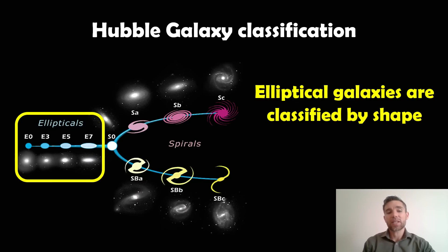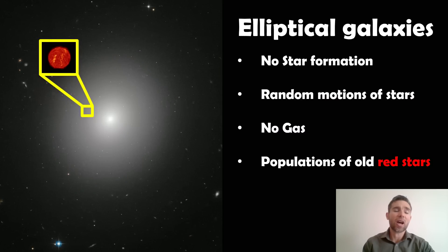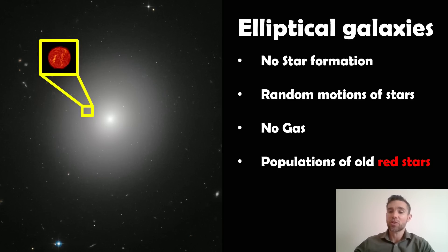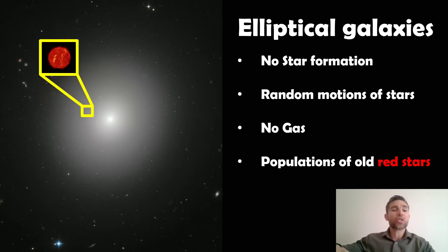Then you have ellipticals, which sit on the left-hand side and are mostly defined by their shapes. We classify them purely on shape — from E0 to E7 — which could be a line-of-sight effect or a physical difference. The main differences between ellipticals and spirals are that ellipticals don't have any current star formation, the motions of stars are more random with no net rotation, they don't have gas, their overall stellar population is older and redder, and they have a smooth surface profile with no spiral arms.